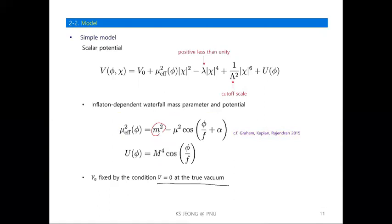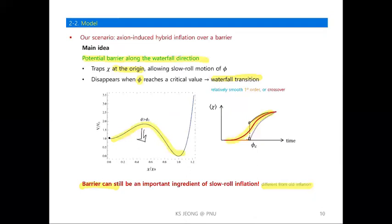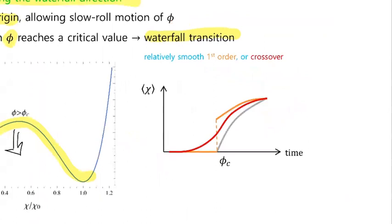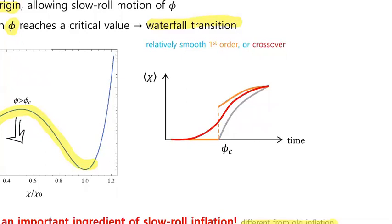Another audience question: you talked about differences between the standard second-order waterfall transition and your scenario with a first-order transition. Is there any slow-roll inflation after the first-order phase transition? The speaker replies: in our scenario, the waterfall field is much heavier than the inflaton field, so there is a mass hierarchy between them, and the waterfall field very quickly goes down to the true minimum. So the situation is quite different from conventional hybrid inflation.